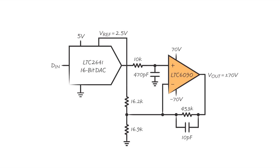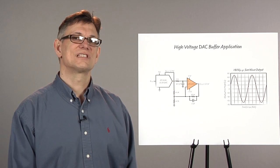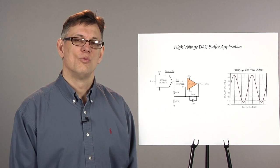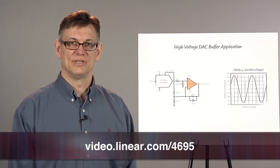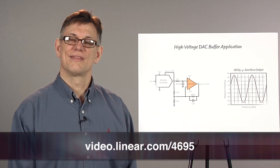So in summary, the LTC6090 is a versatile CMOS amplifier that provides precision high voltage buffering with wide dynamic range capability. Please visit Linear.com for more information. Thank you for watching.